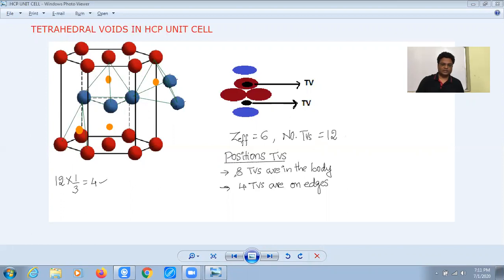You can look at them with this diagram. Look at this. These three atoms and this atom together make one tetrahedral void exactly on the line passing through these atoms like this. So this is one position. Similarly, we will get one more here, one more here.